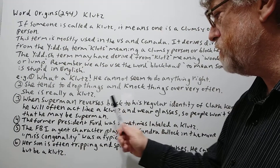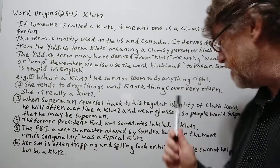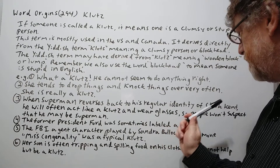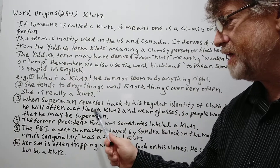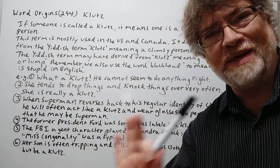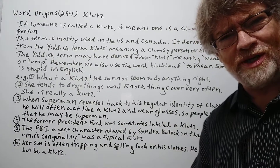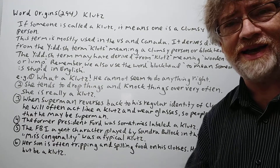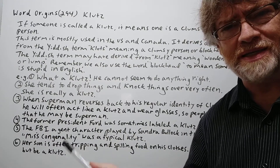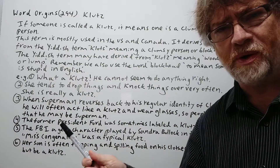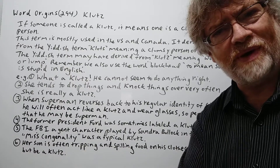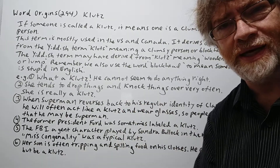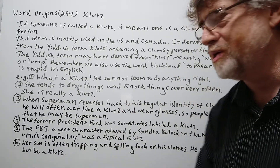Number three: 'When Superman reverses back to his regular identity of Clark Kent, he will often act like a klotz and wear glasses so people won't suspect that he may be Superman.' To keep attention away from him. I often wondered about this one whether it would really work, but that was the idea — if he was such a klotz he couldn't possibly be Superman. Superman was supposed to be so cool, so it was a way of pulling people's attention away from that possibility.